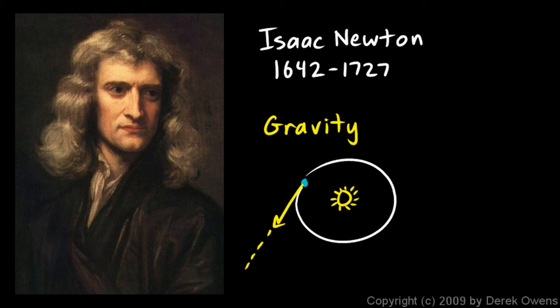And Kepler had the data, the empirical data, the observations, the actual measurements of the positions, that showed that the orbits of the planets were elliptical. And the two coincided perfectly. And that's good science. When the theory and the data match up, then that's reason to believe that the theory is a good theory, an accurate theory, a true theory, a good description of the world.